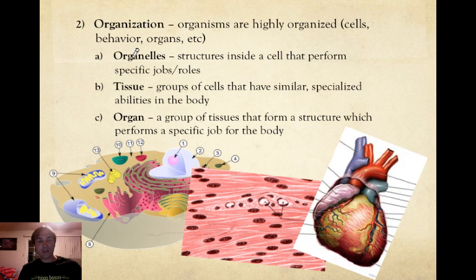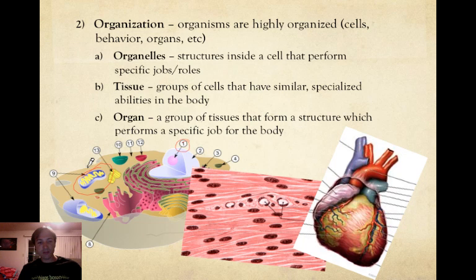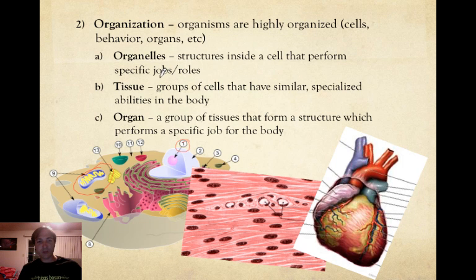First, we have organelles. Think of an organelle as a miniature organ — like your heart or your stomach. These are structures inside the cell that perform a specific job or role. So this is an animal cell. You have this organelle right here, number one — that's the nucleus. It protects the DNA; it's the genetic site of the cell. Over here, number nine, this is the mitochondria. It has the ability to convert our food into usable energy. All organelles perform a specific job within the cell, just like our heart pumps our blood.